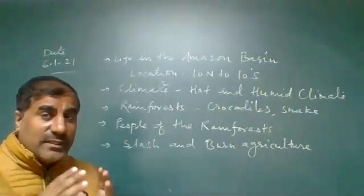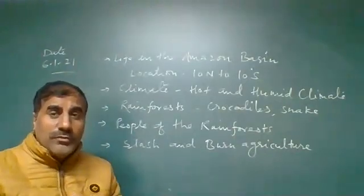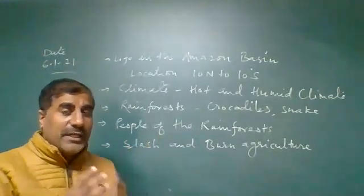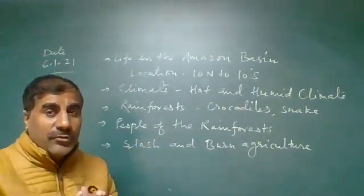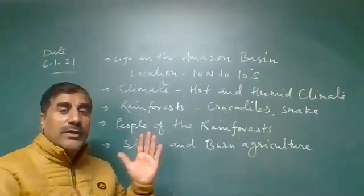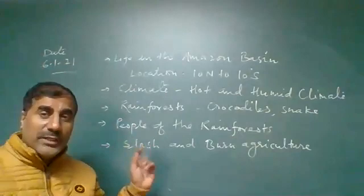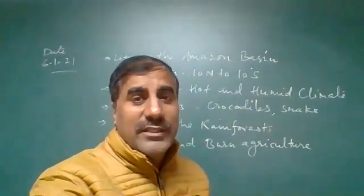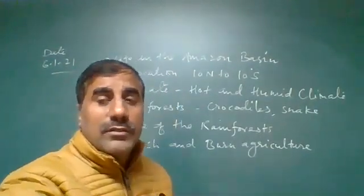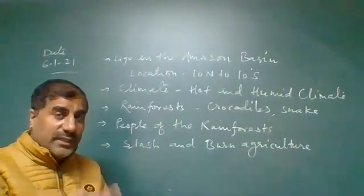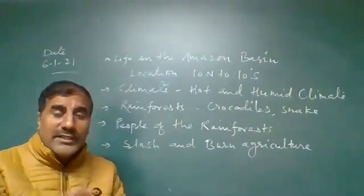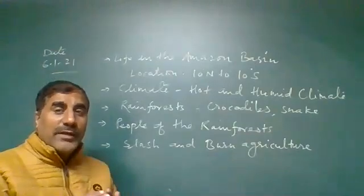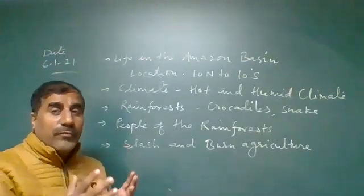The equator is the latitude which receives direct sunlight twice in a year — on 21st March and 23rd September. The equator is the line which divides the earth into two equal parts. So what climatic conditions are found in the equatorial area? Hot climate.